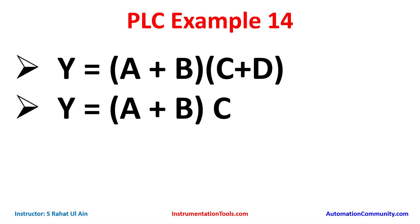The second example is Y = (A + B) · C. We will start with the first one: Y = (A + B)(C + D). Here we have an OR logic gate with A and B, then one more OR logic gate between C and D, and then there is an AND gate between (A + B) and (C + D). For all the inputs we will use normally open contacts. A and B will be connected in parallel with each other, and C and D will be connected in parallel with each other.